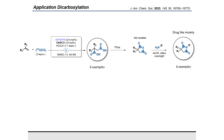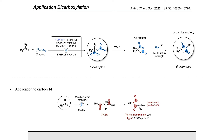This heterocycle is quite interesting because you can find it in many drugs. That's why we were eager to prove that with our methodology you can access this kind of labeled heterocycles. Indeed, we managed to do it with six examples, doing some diversification on the biscarboxylated compounds but also on the amine. One milestone was the exportation of this methodology to carbon-14.